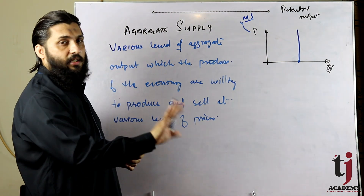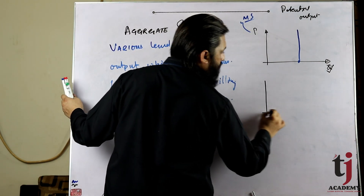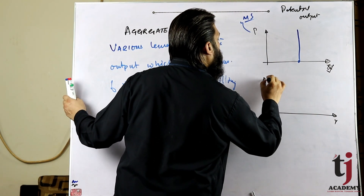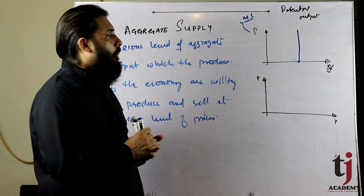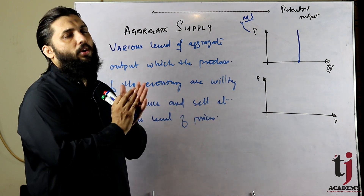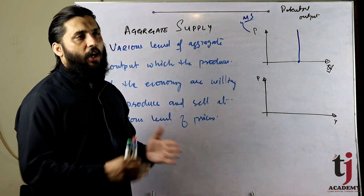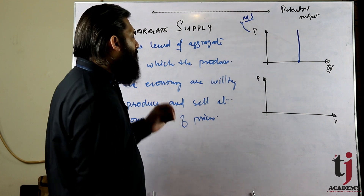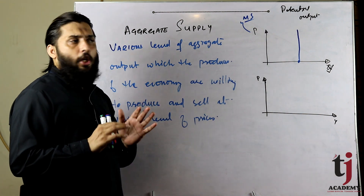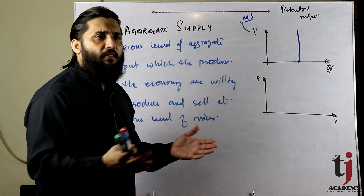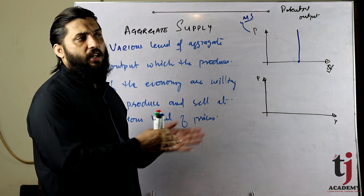यह classicals का concept था। अब Keynes की explanation देखते हैं। Keynes ने जब economy को explain करने की कोशिश की, उस वक्त depression का time चल रहा था। Depression के time पर बहुत ज्यादा unemployment थी, production नहीं हो रही थी, resources idle थे। जब लोगों के पास job ही नहीं है, तो वो high wage की demand नहीं कर सकते — वो minimum wage पर तैयार होंगे।